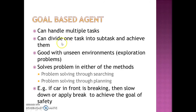Goal-based agents can handle multiple tasks. In that case, they can divide the big task into multiple sub-tasks and prioritize one over the other. This information could be obtained from the problem description. It is good with unseen environments, which in the AI domain are called exploration problems.